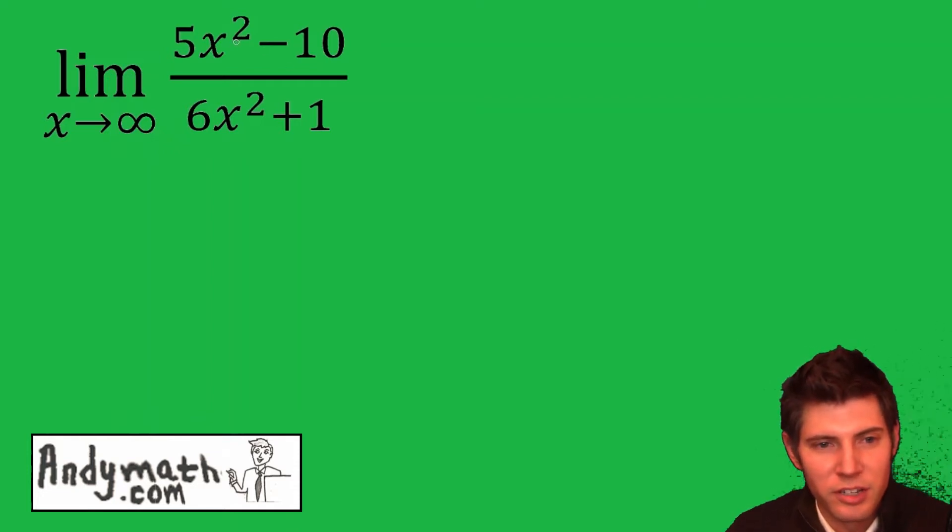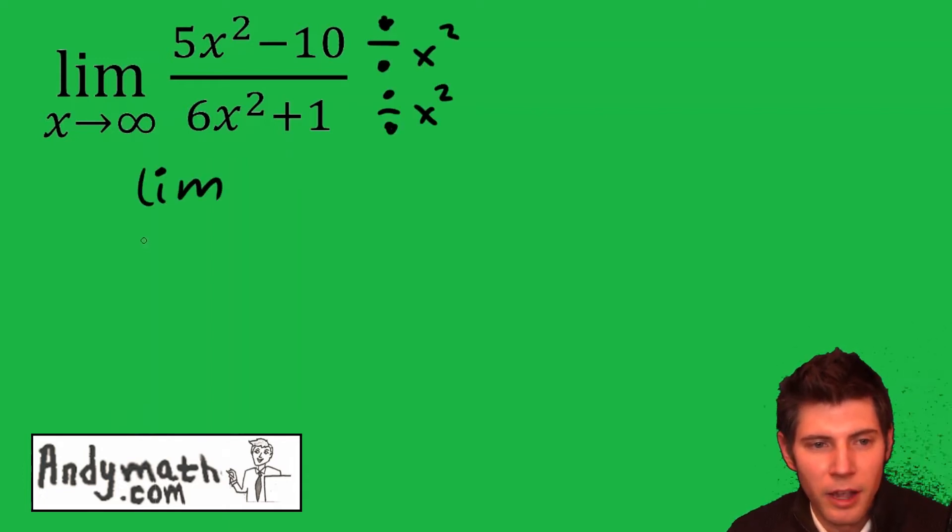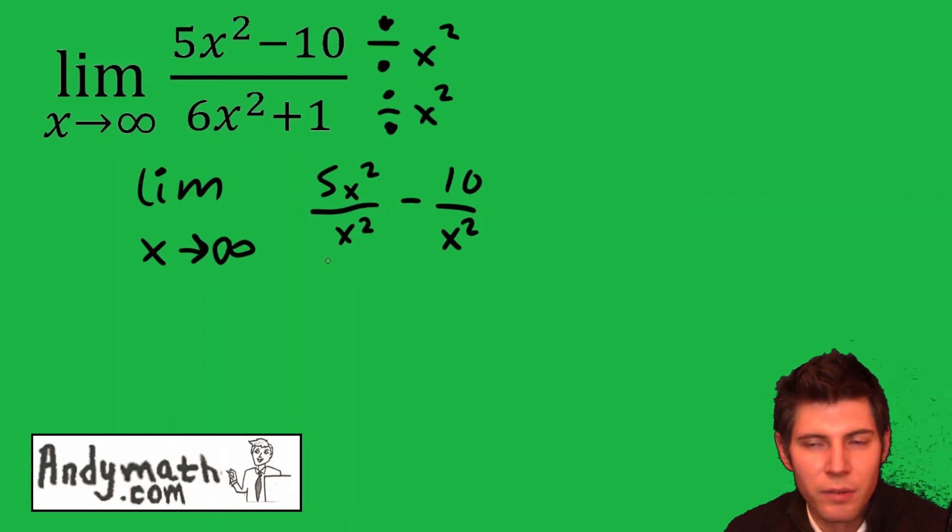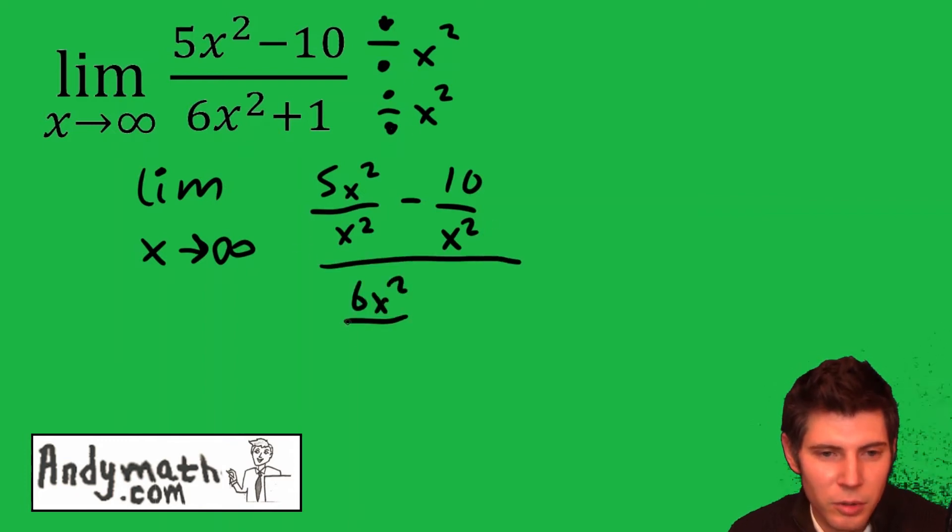So first thing you do on these is find the highest degree variable, which is x squared, and you're going to divide top and bottom by x squared. So this would become the limit. I always rewrite the limit portion out. I keep writing it until I apply it. Then it's going to be 5x squared over x squared minus 10 over x squared. So every single term is going to get divided by the x squared. 6x squared over x squared plus 1 over x squared.